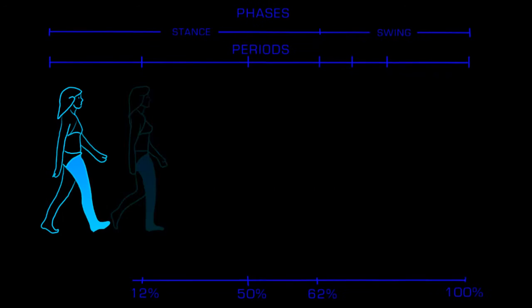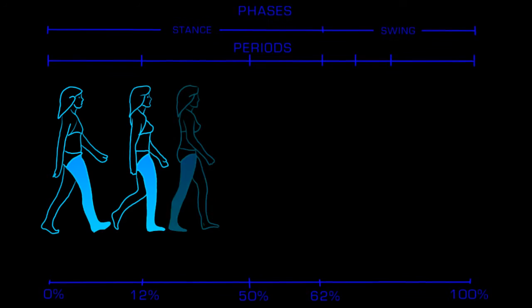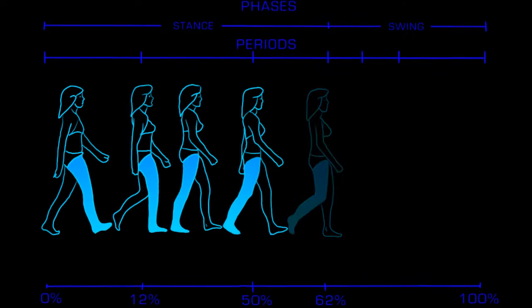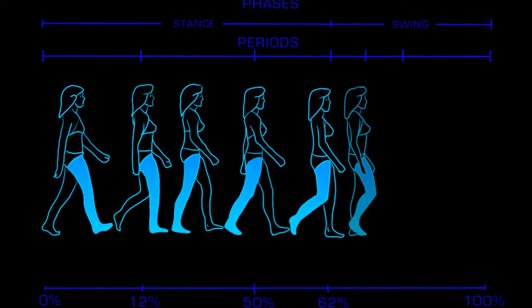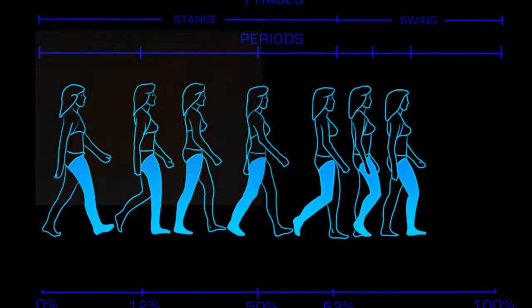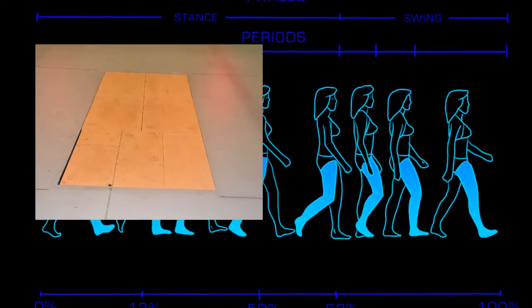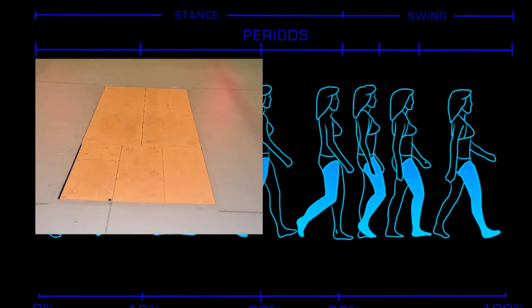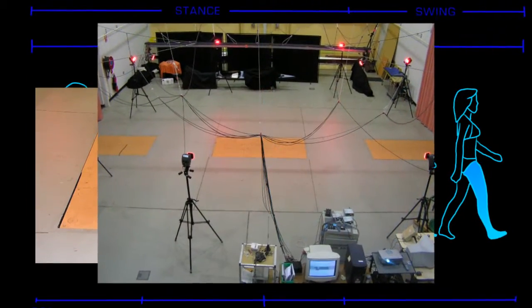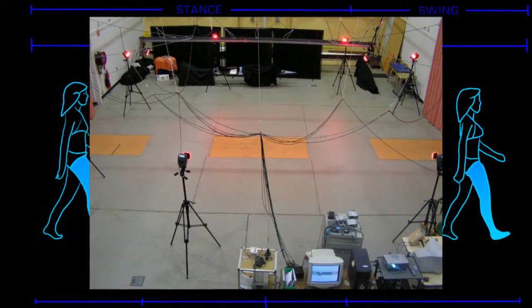Clinical gait analysis is a useful tool to assess a patient's walking conditions and to plan and monitor interventions. In the past, gait analysis was measured during a single well-positioned step on a force plate in an oversized lab.